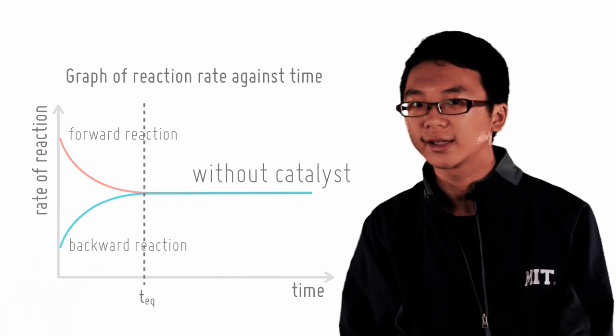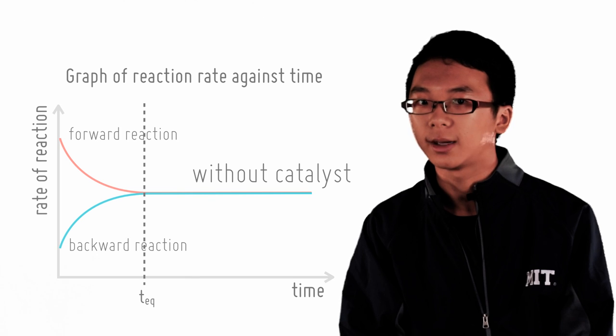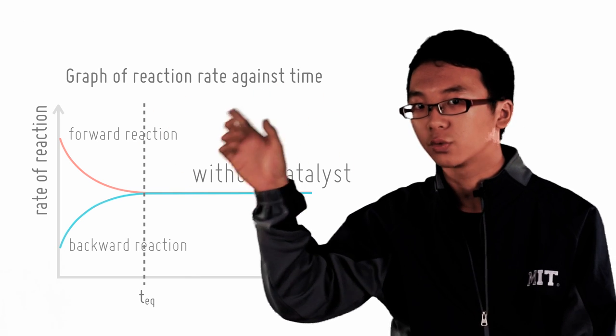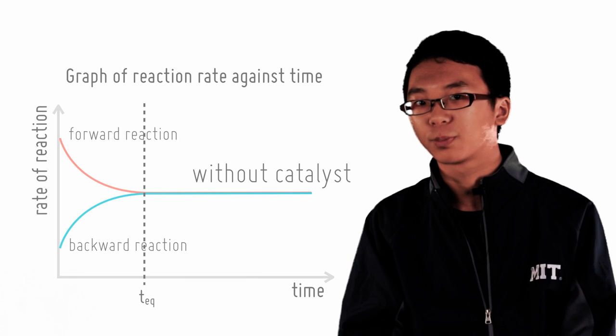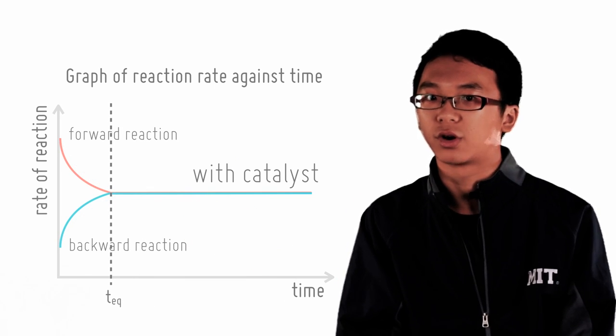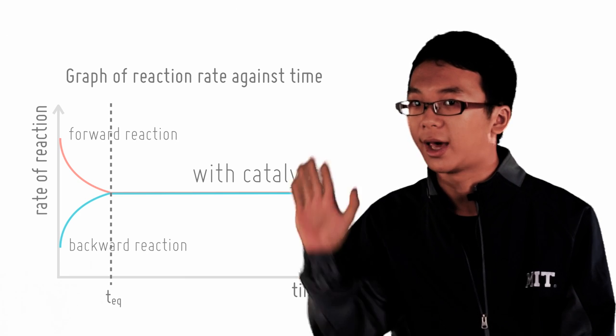How can we visualize a faster reaction on this graph of rate of reaction over time? Let's say the system is not at equilibrium. It normally takes this long to reach equilibrium. If the reaction proceeds faster, then it must mean that equilibrium is reached faster. So the graph appears to be compressed along the x-axis.